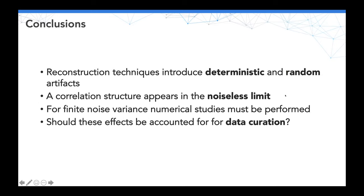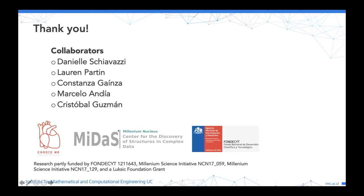In conclusion: reconstruction techniques introduce deterministic and random artifacts that could act as adversarial perturbations to image classification methods. A correlation structure should appear in the noiseless limit as shown. For finite noise variance, analytical techniques are harder to leverage, so we need computational techniques. An important open question is whether these effects should be accounted for in data curation — not only balancing for artifacts like hospital identity, but also accounting for image reconstruction protocols.